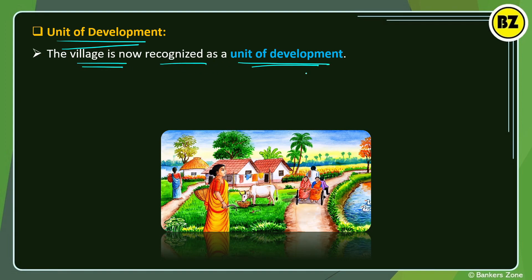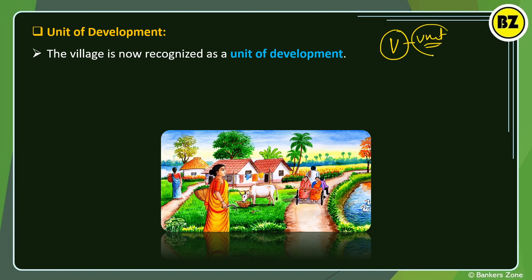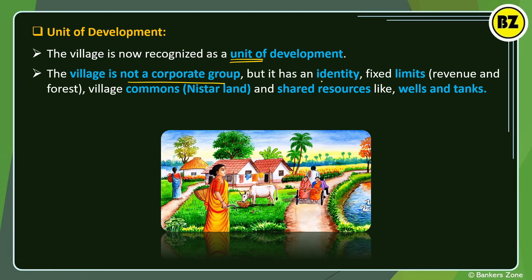The village is now recognized as a unit of development. Even Gandhiji said we must look after the villages and consider each village as one unit of development. A village is not a corporate group, but it has its own identity, fixed limits such as revenue and forest boundaries, and village commons — the nistar land that is common land anyone can use.